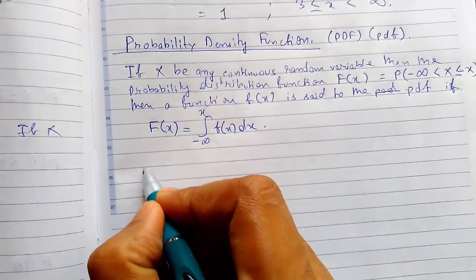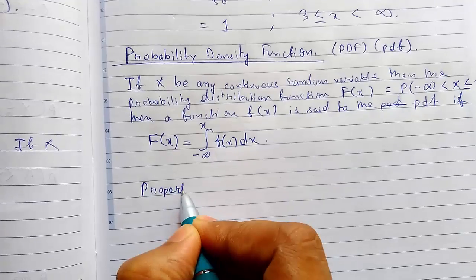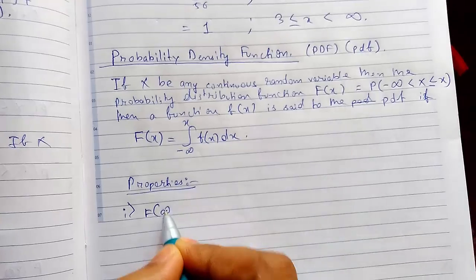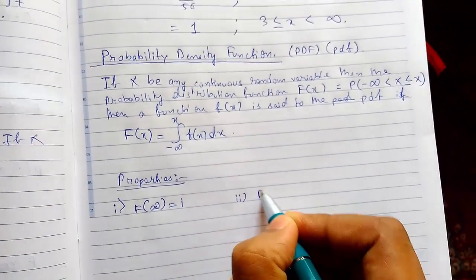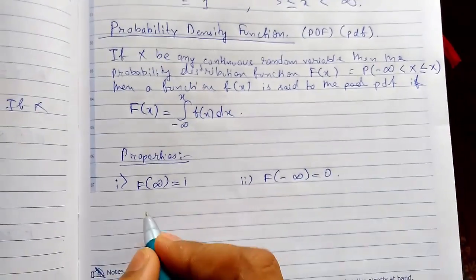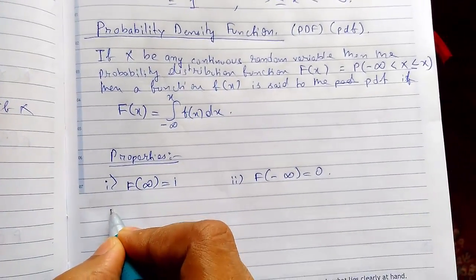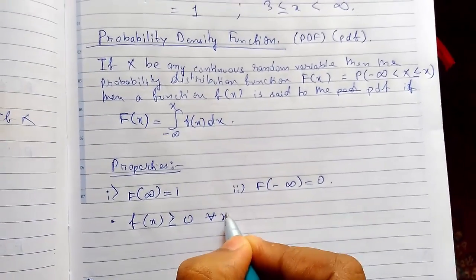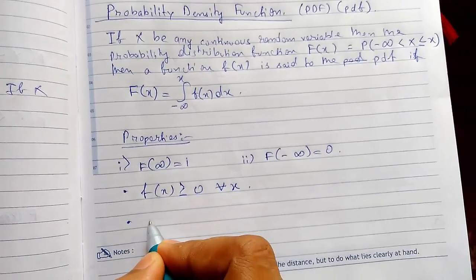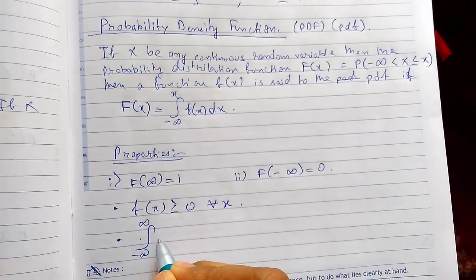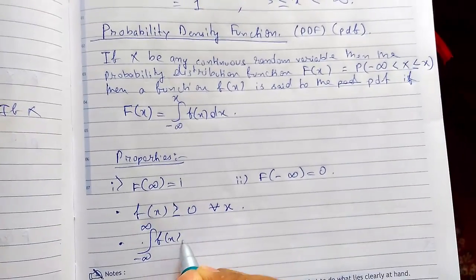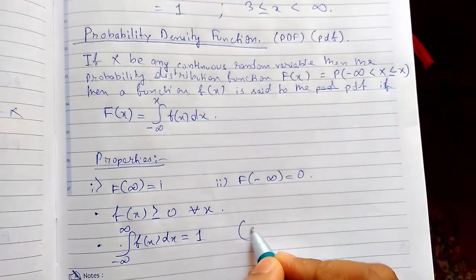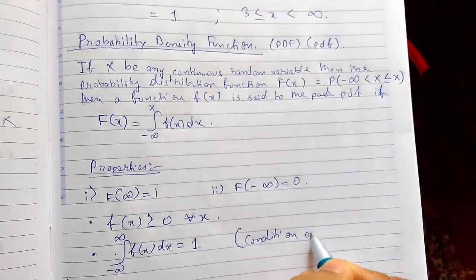There are some properties to it. Number one: F of infinity is one. Number two: F of negative infinity is zero. We have seen earlier also. f of x must be greater than or equal to zero for all values of x. Now this is important. The integral from negative infinity to infinity of f of x dx equals to one, and this is the condition of probability density function.